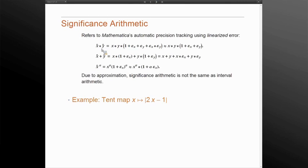Significance arithmetic refers to how Mathematica keeps track of this precision and it does this by using linearization of the error. When you multiply two numbers, the exact error would be given by this polynomial where when we linearize it we discard this term which is much smaller typically. Addition is done exactly but power is also doing this linearization.